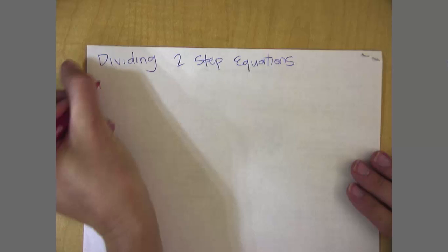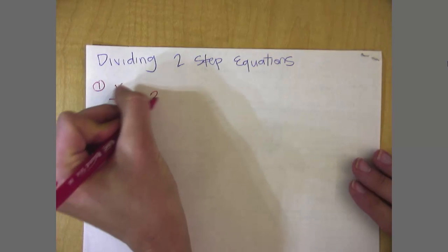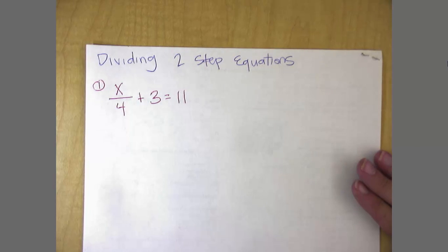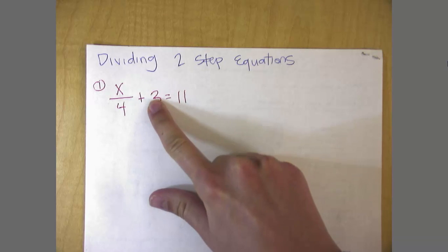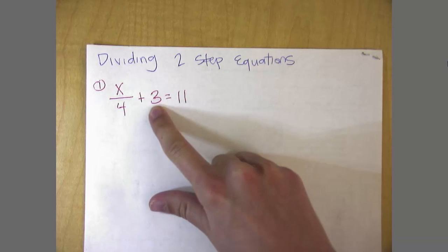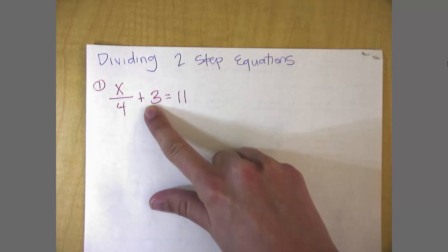First one we're going to look at is x divided by 4 plus 3 is equal to 11. So just like before, what I need to do is get rid of, not necessarily the number in the middle, it's usually in the middle, but the one that does not have a variable with it. This is the thing that does not have the variable with it, so I've got to get rid of it.